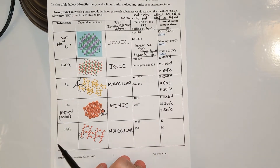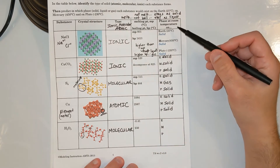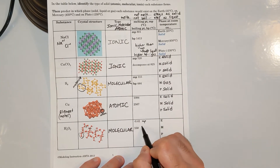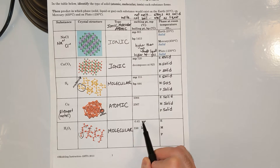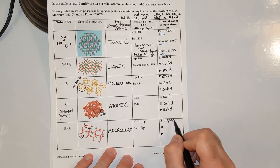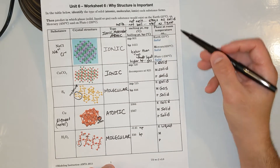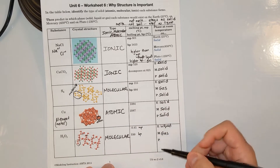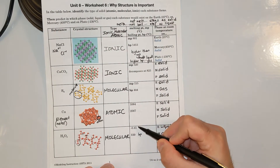Now let's look at H2O2. The melting point is −0.41°C. On Earth at 25°C, that's higher than the melting point but lower than the boiling point of 150°C — it's going to melt but not boil, so it's a liquid on Earth. And hydrogen peroxide is indeed a liquid on Earth. On Mercury at 450°C, that's way higher than both temperatures — it's going to melt and boil, becoming a gas. On Pluto at −230°C, that's lower than both, so it's not going to melt — it's a solid.